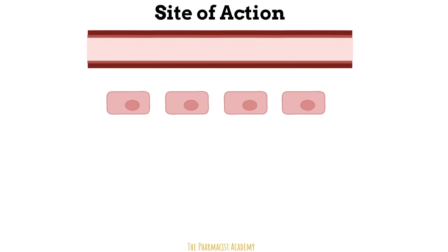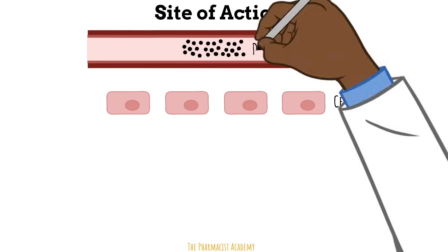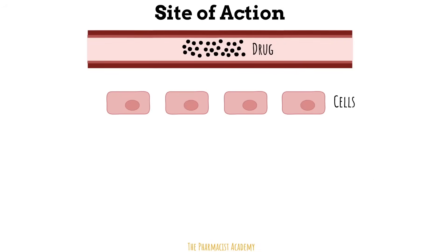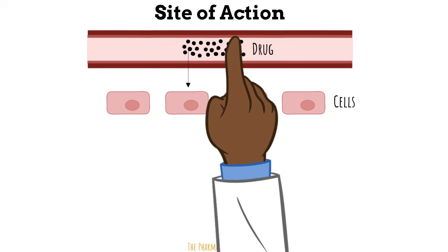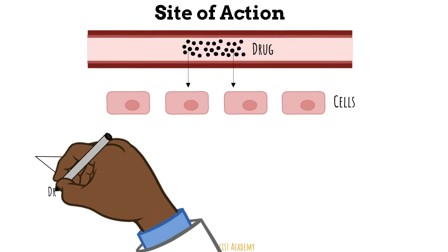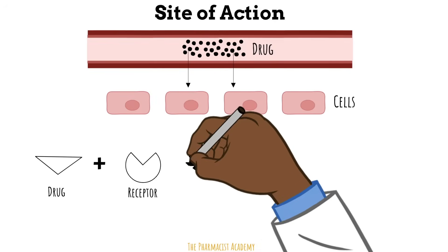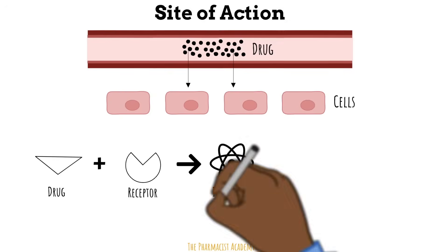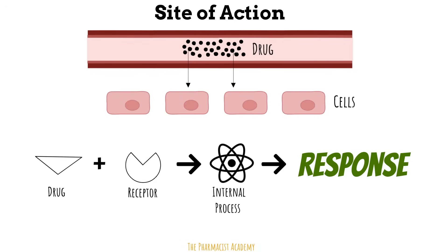Please remember, this is right after distribution. So here's the drug at the site of action — it's moving from the blood to act on the receptors on the cells. Receptors are proteins that receive chemical information when a ligand such as a drug binds to the active site. After the interaction, things happen within the cell and then we get a response.